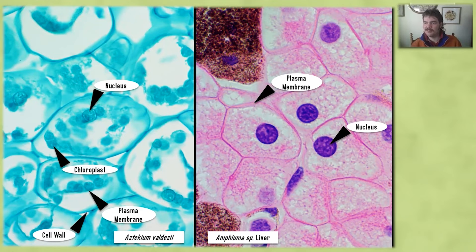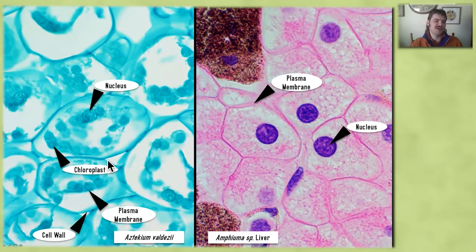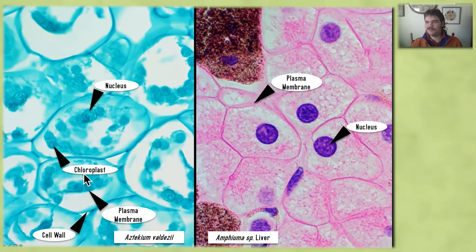The nucleus is important because it is the control center of the cell. It's where the genetic material, the DNA, is located, and so it controls all of these cellular processes. When we move over here to a plant cell from an aztecum, we can see we've also got a plasma membrane that surrounds the cell and does basically all of the same things. We also have a nucleus as well, kind of off to the side. But you can see one major difference is that the plasma membrane here is all kind of shriveled, and the reason is that we use a coagulating fixative to preserve the tissue, which basically causes the living part of the cell to just shrivel up.